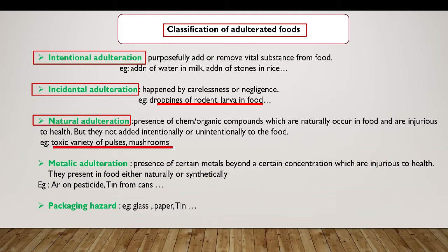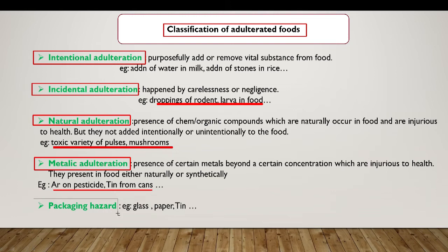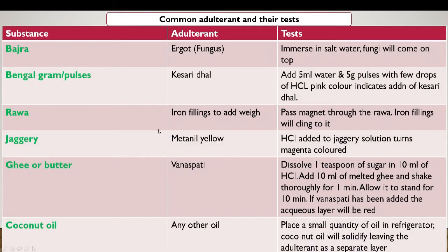In metallic adulteration, certain metals are present beyond a certain concentration which are injurious to health. They are present in food either naturally or synthetically — for example, arsenic from pesticides or tin from cans. Finally, packaging hazards include glass, pepper, tin, and similar contaminants.